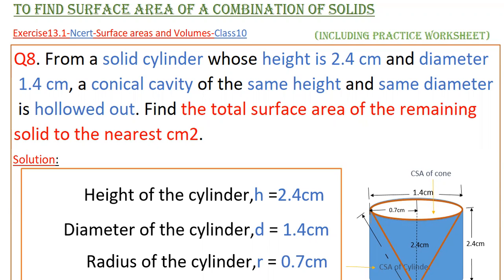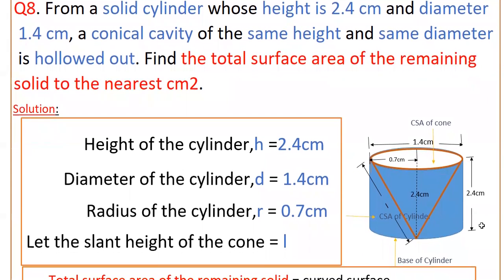Here this is a solid cylinder. The height of the solid cylinder is 2.4 cm and diameter is 1.4 cm. A conical cavity of the same height and same diameter is carved inside this cylinder. The diameter is the same, so 1.4 cm — this cone's diameter is also 1.4 cm and height is also 2.4 cm. The total surface area means the curved surface area of the cylinder, plus the inside curved surface area of the cone, plus the base area of the cylinder in the form of a circle.